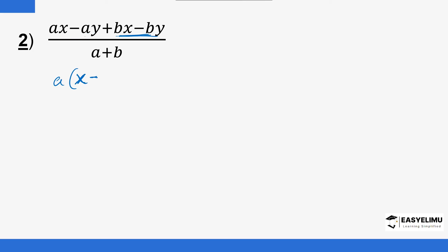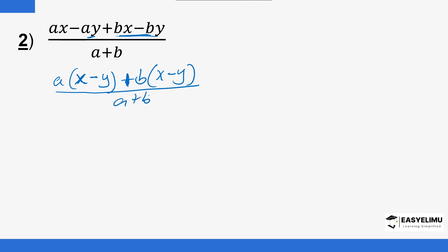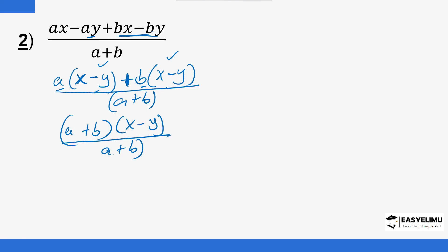A·y divided by a is y, giving the bracket (x + y). For the second pair, the common factor is b. B·x divided by b is x, and b·y divided by b is y — giving (x + y) again. The two brackets are the same, so we have (a + b)(x + y) in the numerator, divided by (a + b) in the denominator. The bracket (a + b) cancels, and the answer is x + y... wait — the result here is x minus y.